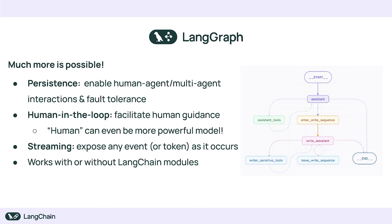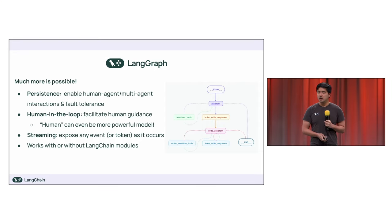There's also a lot more you can do with LangGraph. There's first-class support for persistence and interrupting from intermediate states. Through this human-in-the-loop workflow, you can hand off to a human — in this case, even a more powerful LLM on your backend — for more sensitive steps. It also works with or without Langchain modules.